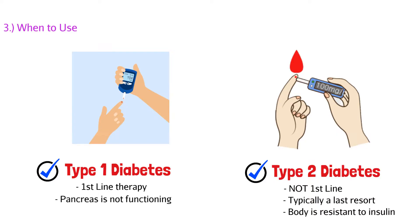Remember, type 2 diabetic patients have a functioning pancreas and insulin is being produced. The problem is that the insulin is not enough — they're resistant to insulin. So to overcome that, we can give them more insulin, but at that stage it's last line.